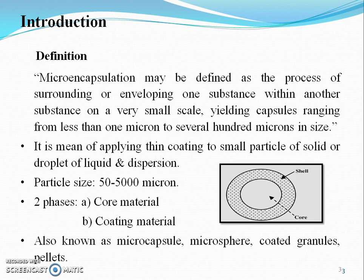Microencapsulation may be defined as the process of surrounding or enveloping one substance within another substance on a very small scale, yielding capsules ranging from less than 1 micron to several hundred microns in size. It is a means of applying a thin coating to small particles of solid or droplets of liquid in dispersion. Particle size basically ranges from 50 to 5000 microns. It consists of two phases: a core material phase and a coating material phase.